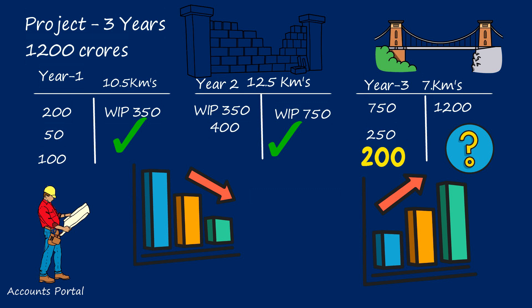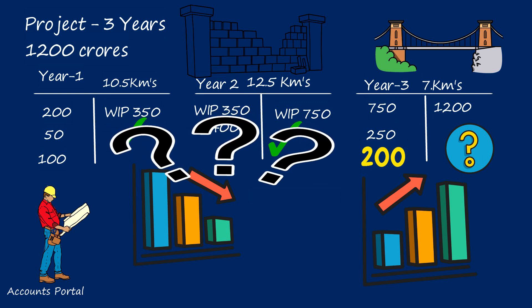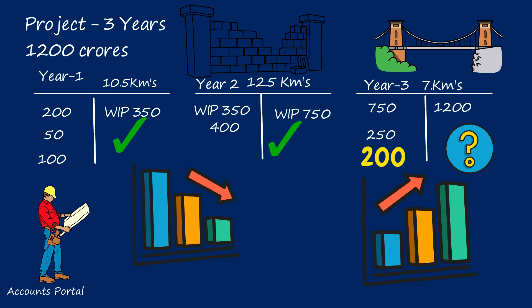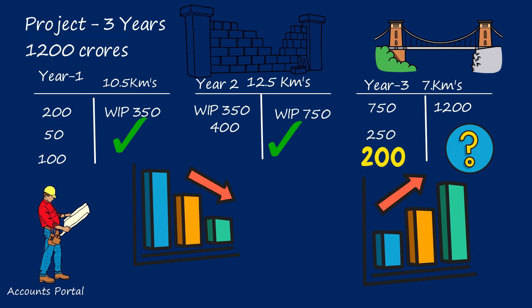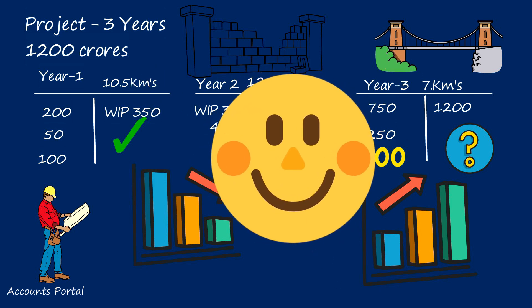As and when the work is done, to that proportionate extent, we have to recognize the profit. We have to set aside normal accounting under AS-2 and AS-9 — wherever AS-7 applies, AS-2 and AS-9 cease to apply. Profit of the contract should be spread over the life of the project because of the nature of this industry. It takes a long time to execute a single project, and recognizing all revenue only in the final year would not be fair to such businesses.